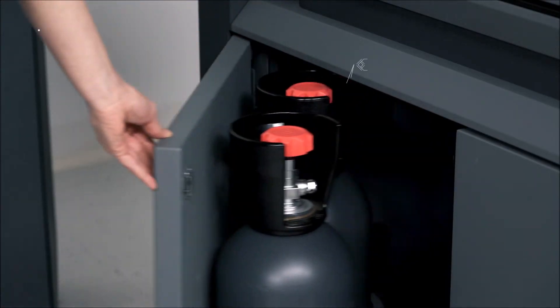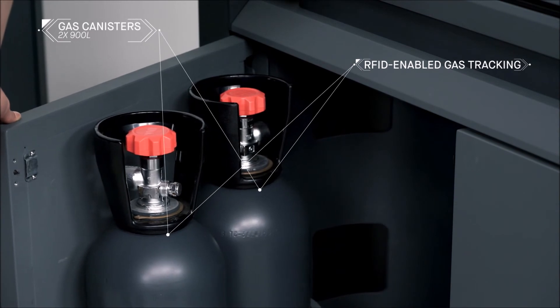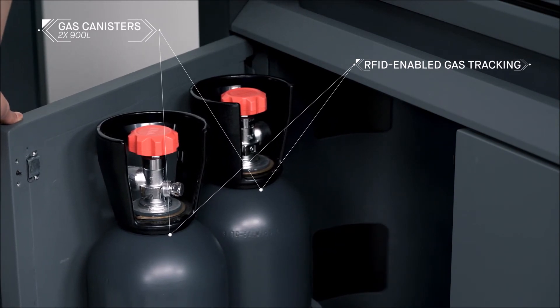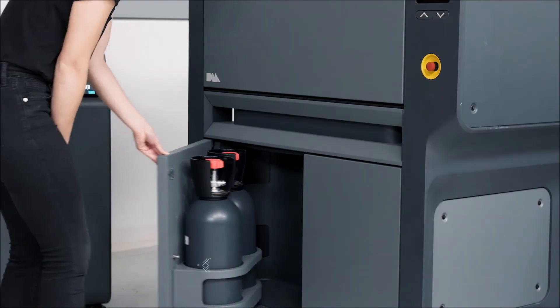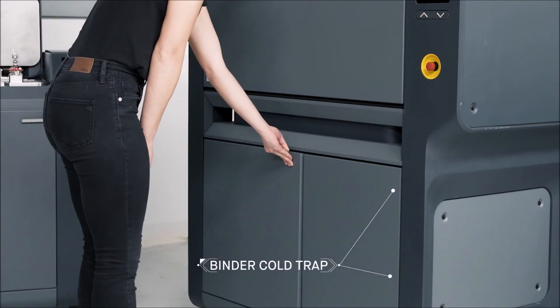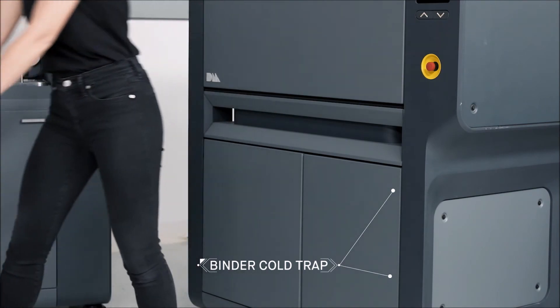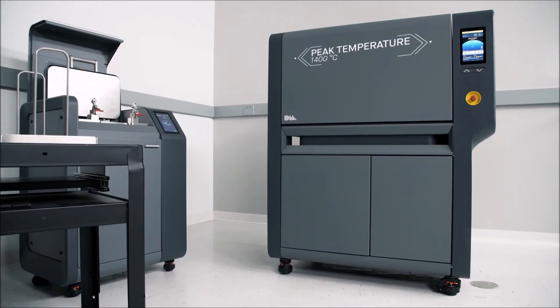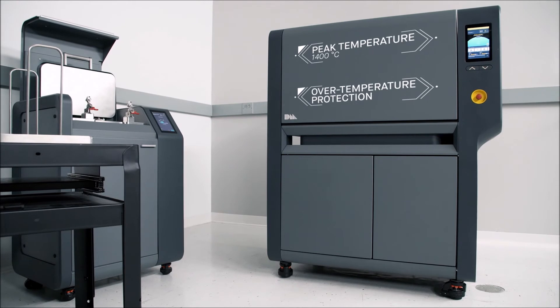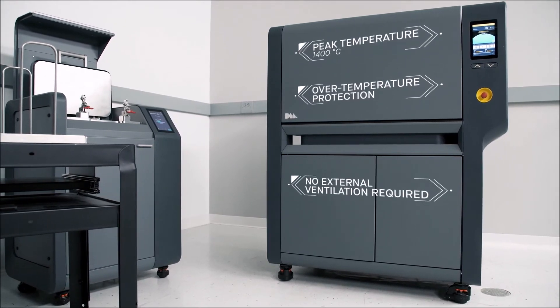The furnace features two onboard gas canisters that are easily removed and equipped with RFID tracking devices. It is equipped with a disposable binder cold trap liner for safe and easy disposal of binder removed during sintering. Built-in temperature profiles are tuned to every build and material to ensure uniform heating and cooling.